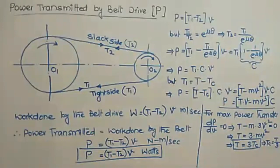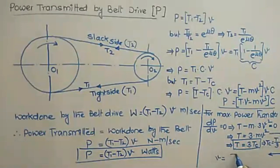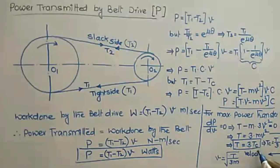From the condition Tc equals T/3, you can find the limiting velocity — the belt velocity for maximum power transfer. Since Tc equals mv², setting mv² equals T/3 gives v equals the square root of T/(3m). This is the velocity of the belt for maximum power transfer.